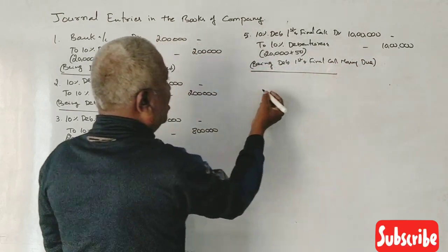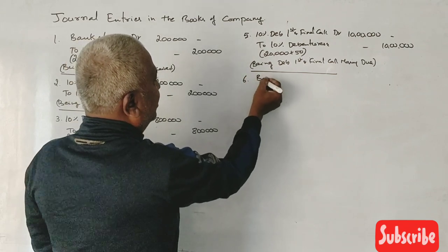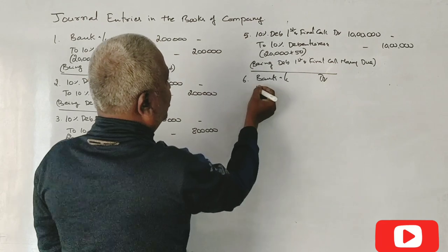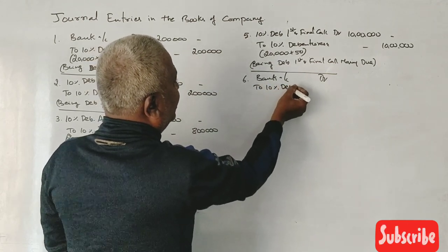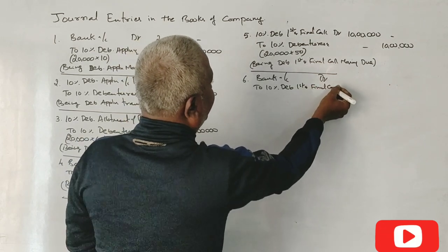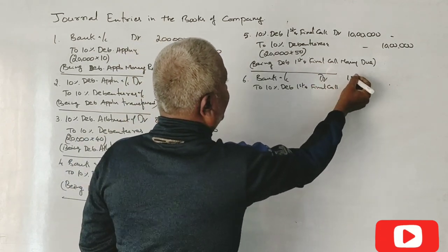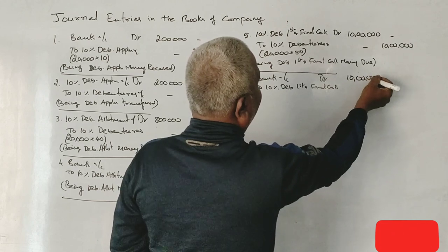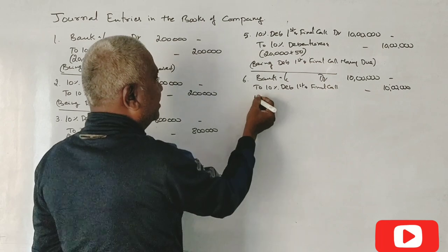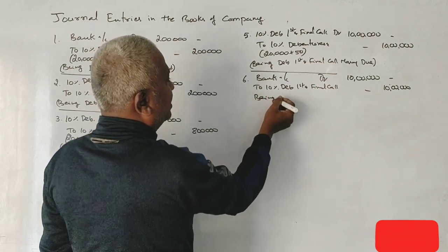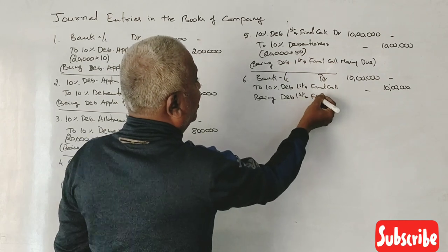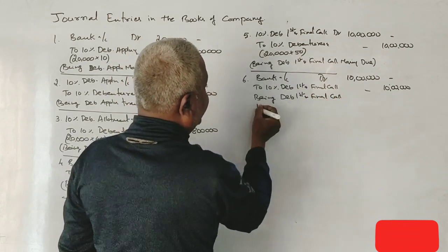Last journal entry: Bank account debit to 10 percent debenture first and final call account, 10 lakhs and 10 lakhs. Being debenture first and final call money received.